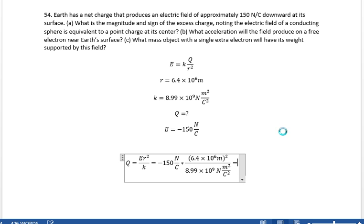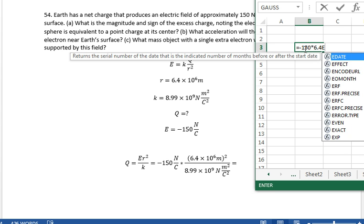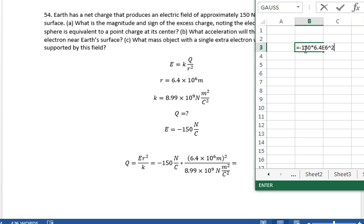So what does this give us for a total charge? Equals minus 150 times 6.4 E to the 6th squared divided by 8.99 E to the 9th, gives us 683.